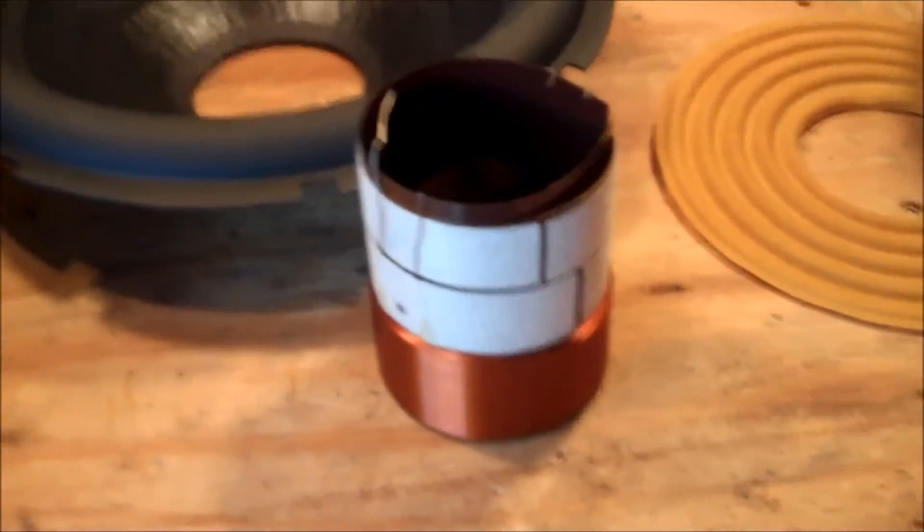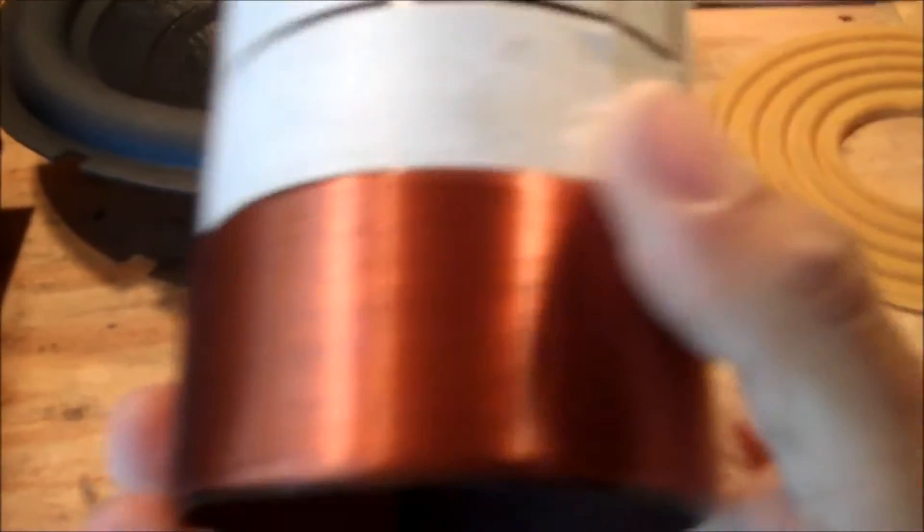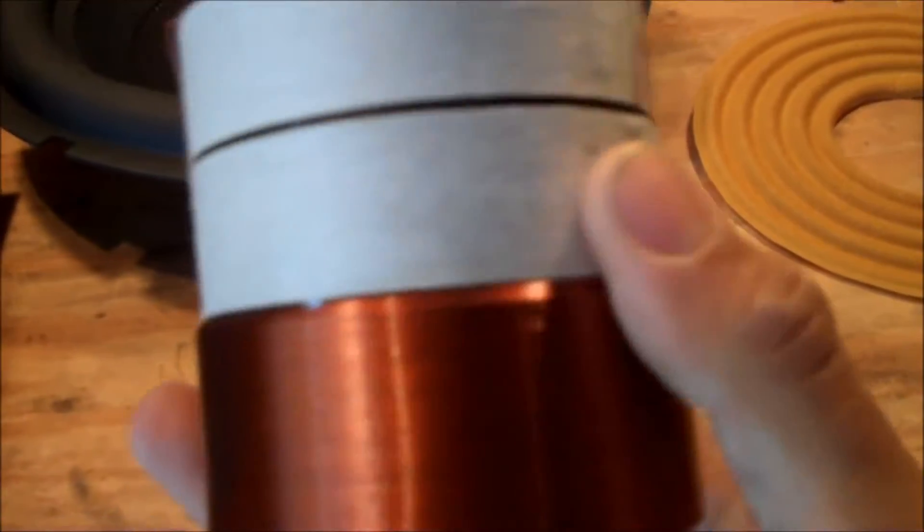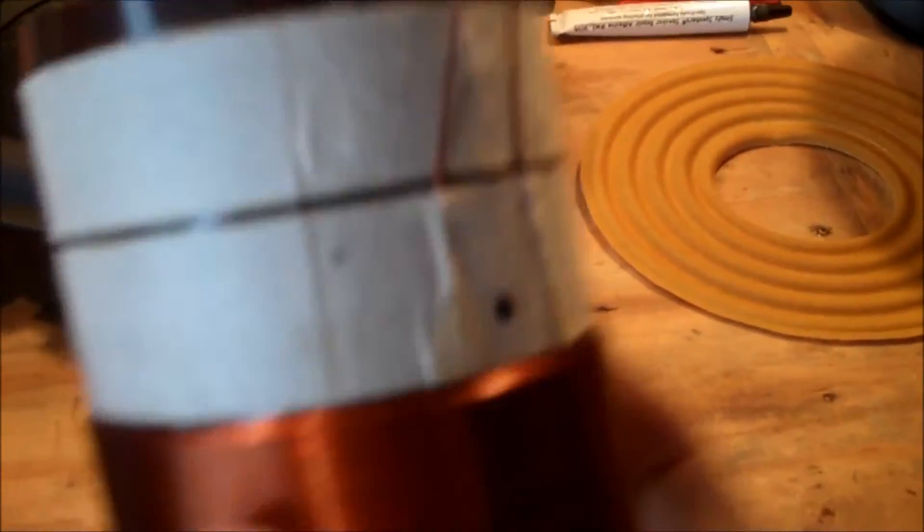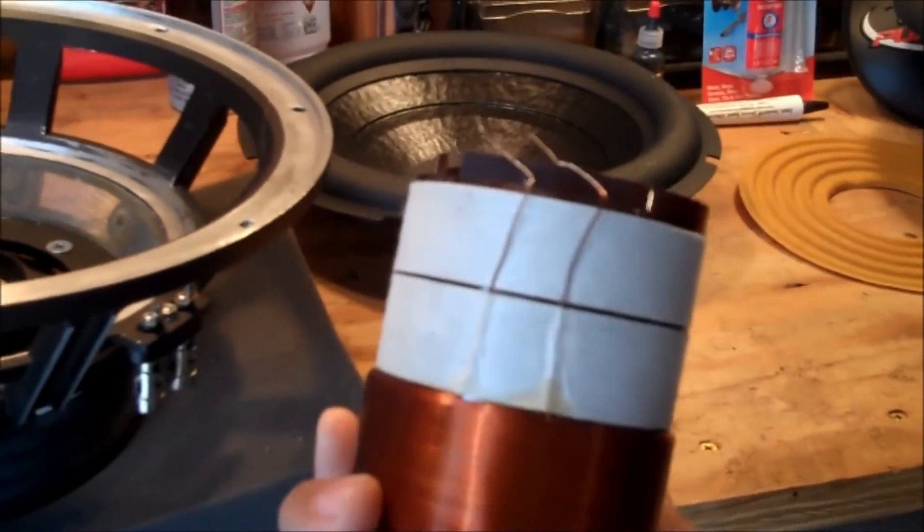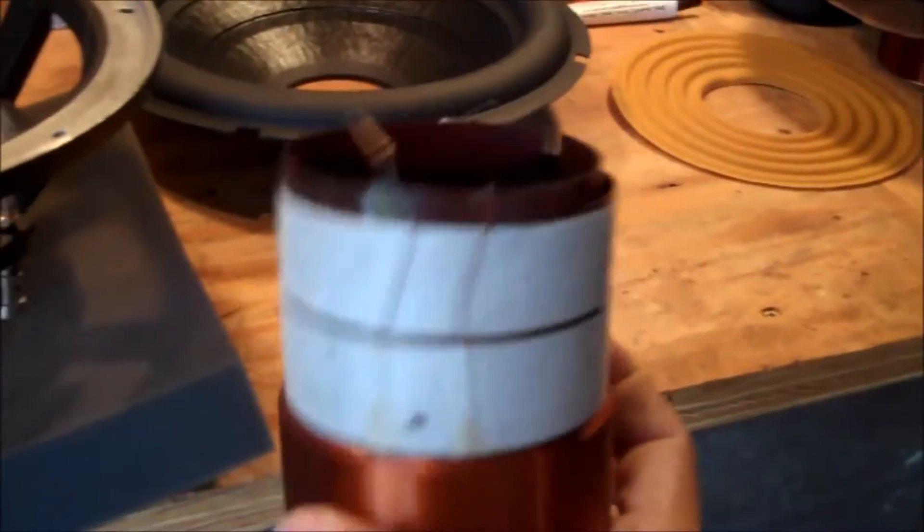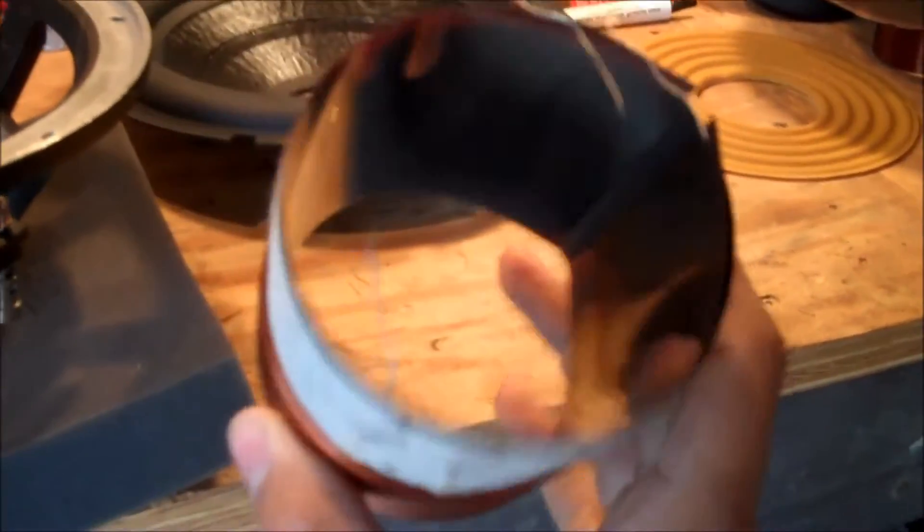When I go to the new coil, what I'm going to do is mark in various spots around 18 millimeters, let's just say, and then we're going to try to line the spider up to that and we can go ahead and glue it on at that point.